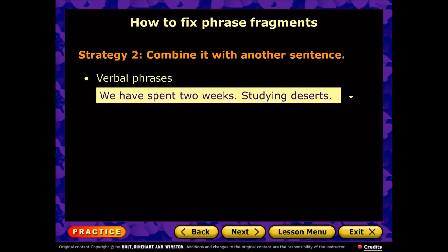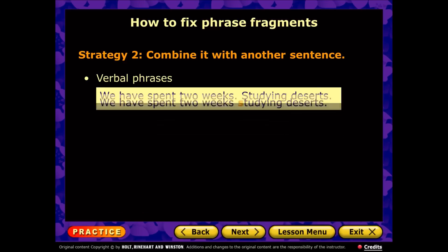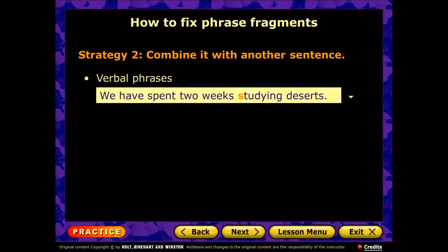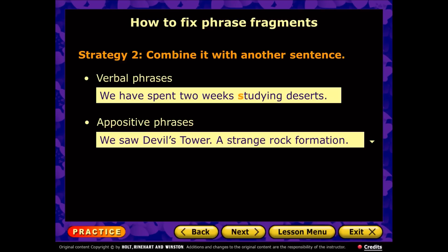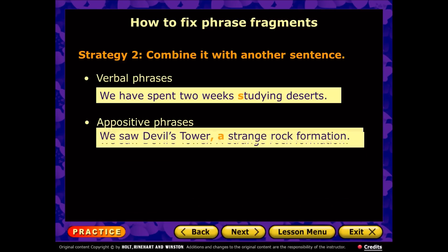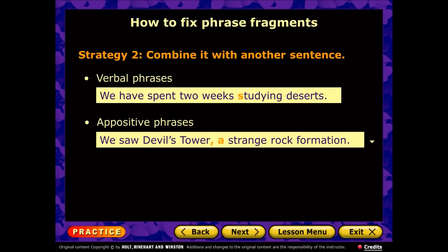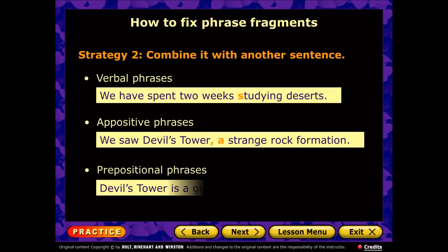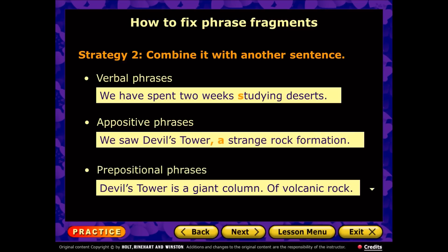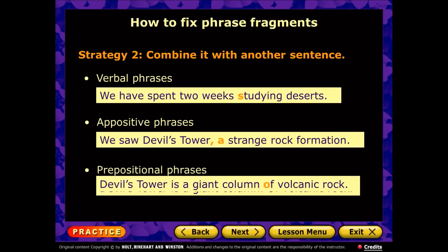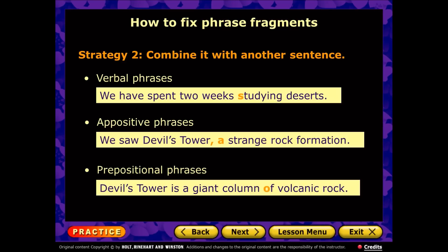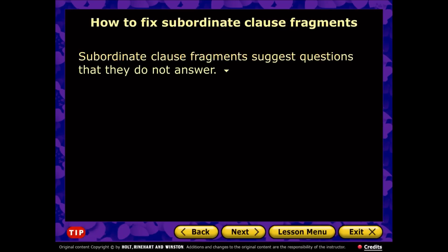The second strategy is to combine the fragment with another sentence. For the verbal phrase, say 'We have spent two weeks studying deserts.' For the appositive, say 'We saw Devil's Tower, a strange rock formation' — separated by a comma. For the prepositional phrase, say 'Devil's Tower is a giant column of volcanic rock' — combining it with the first sentence to make a complete thought.